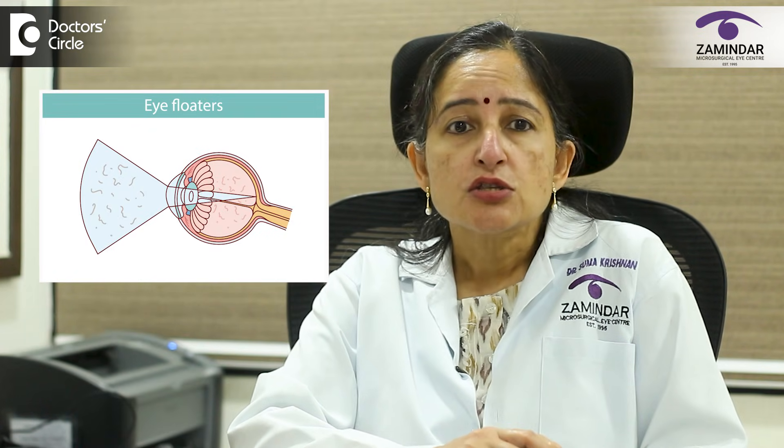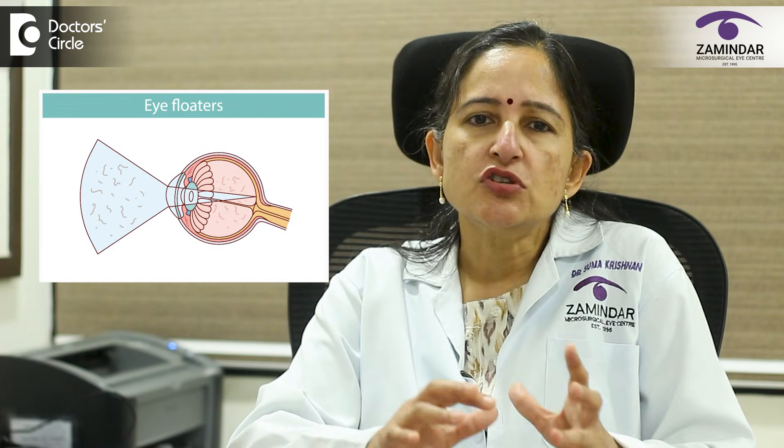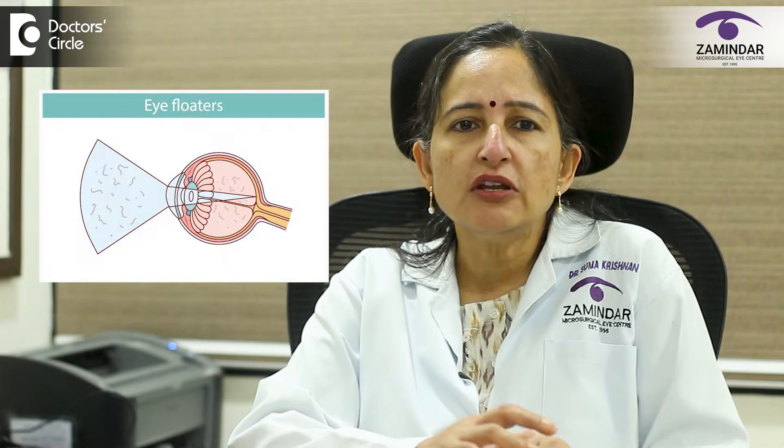Floaters. Have you ever noticed tiny spots, squiggly lines or cobweb-like shapes drifting across your vision? These are called floaters. The next time you see clumps or strands floating in front of your eyes and you go to see your eye doctor, you can tell him or her that you are seeing floaters. And this is not really an uncommon presenting complaint in an eye clinic.